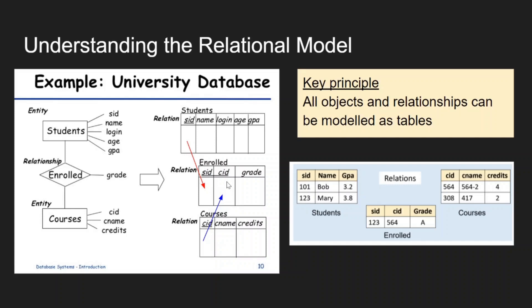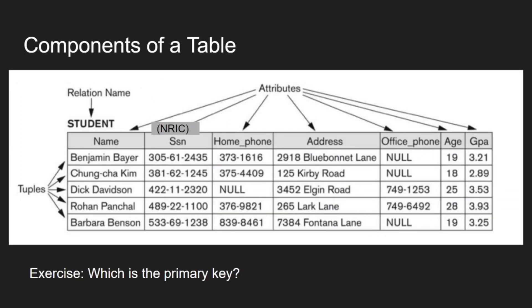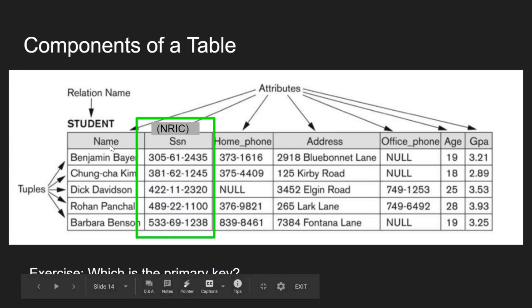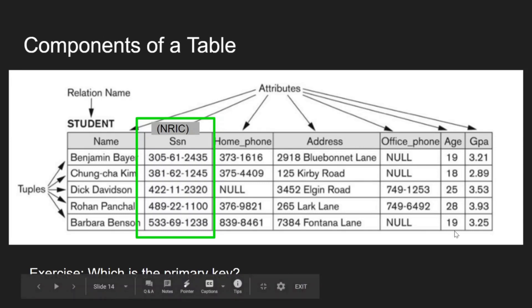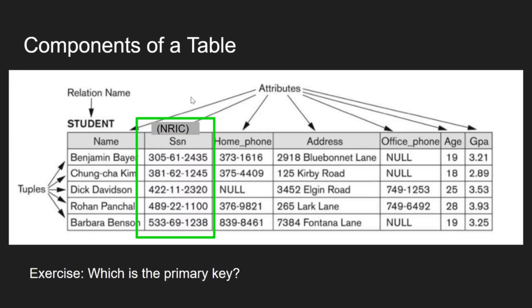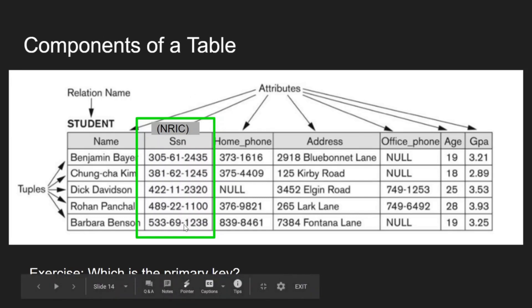Here's a short exercise: which attribute in this table should be the primary key? The answer is the SSN (social security number), because name can't be used — people can share names — home phone can't be used since some people don't have them, address can't be used since siblings might share one, and office phone also can't be guaranteed unique. As a general rule, pick the most confirmed-to-be-unique identifier in the table.